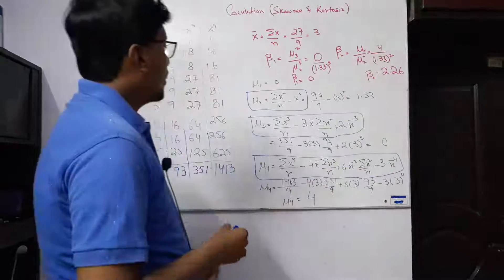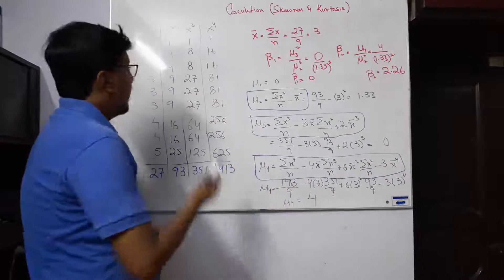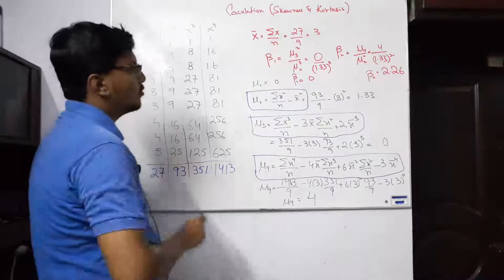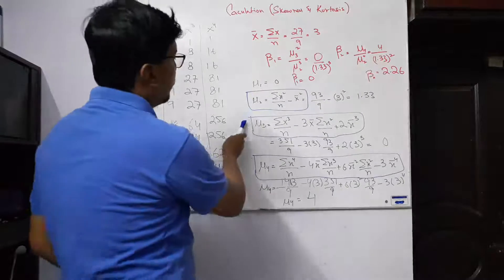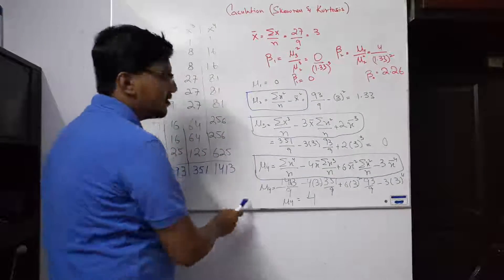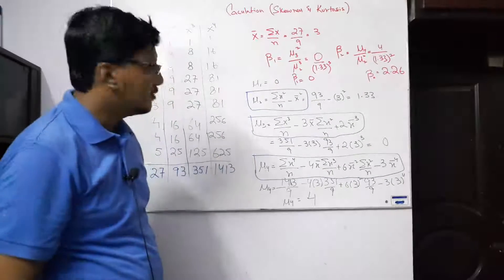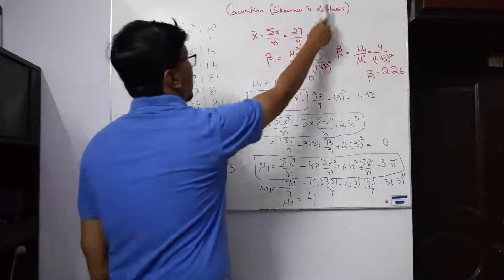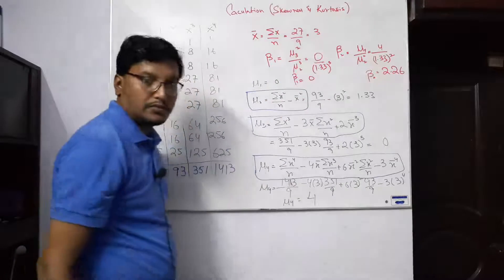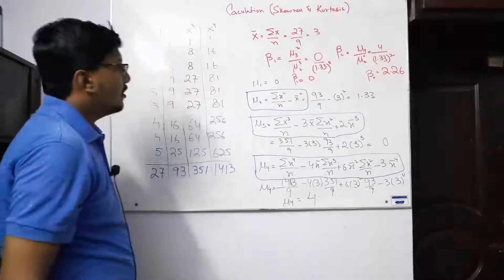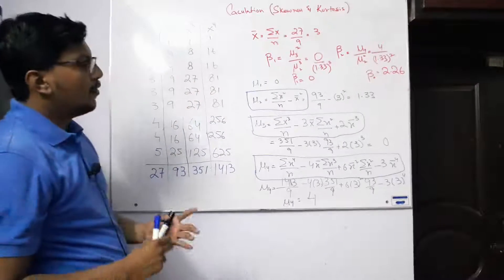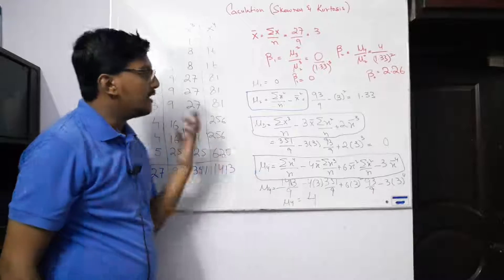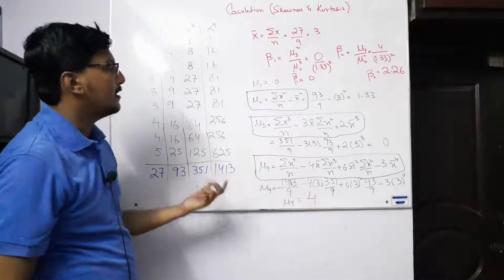So if we have these 9 values of x, we have to compute these formulas to find out the skewness and kurtosis. We just need to compute the required values — this is very straightforward.